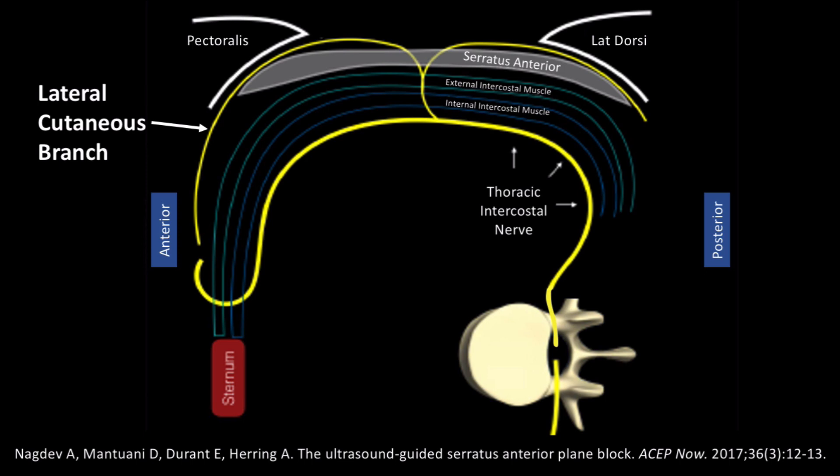While both blocks are incredibly simple, I'm going to discuss the serratus anterior block because most physicians have an easier time conceptually putting an anesthetic bolus in the lateral chest wall rather than next to the transverse process of the spine required for an erector spinae block. Here is a diagram from a recent ASEP Now article showing relevant anatomy of the serratus anterior plane block.